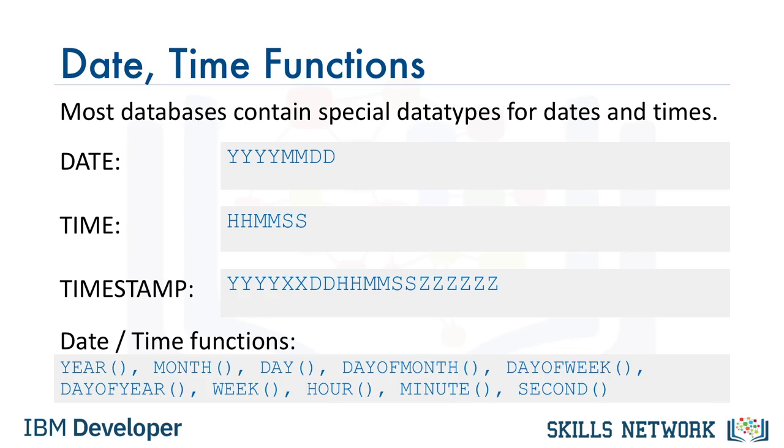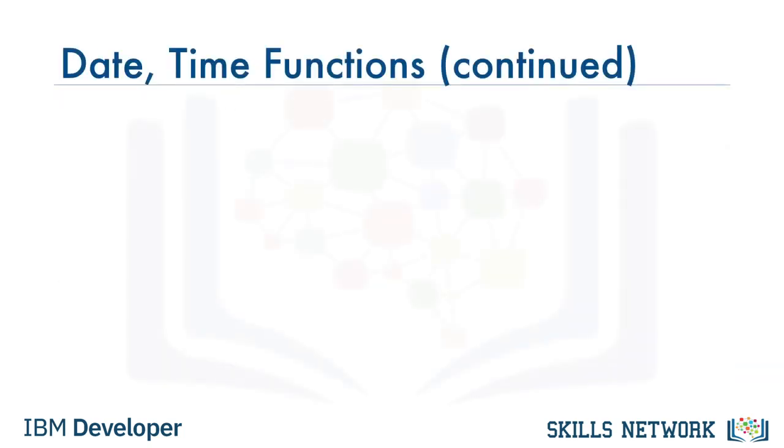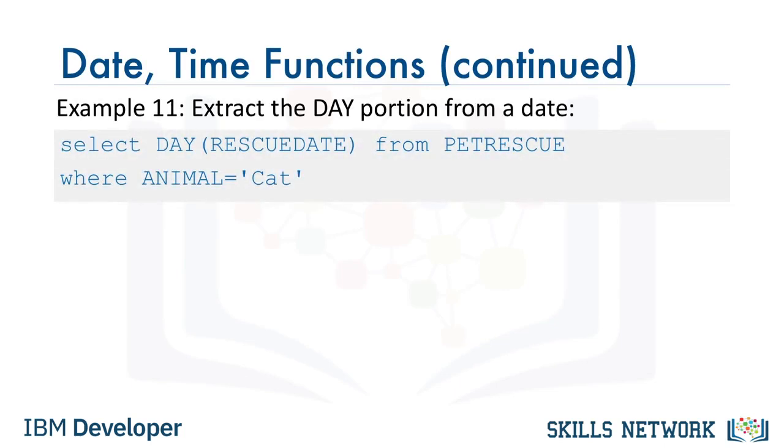Let us look at some examples of queries for date and time functions. The day function can be used to extract the day portion from a date. For example, to get the day portion for each rescue date involving cat, select day rescue date from pet rescue where animal equals cat.